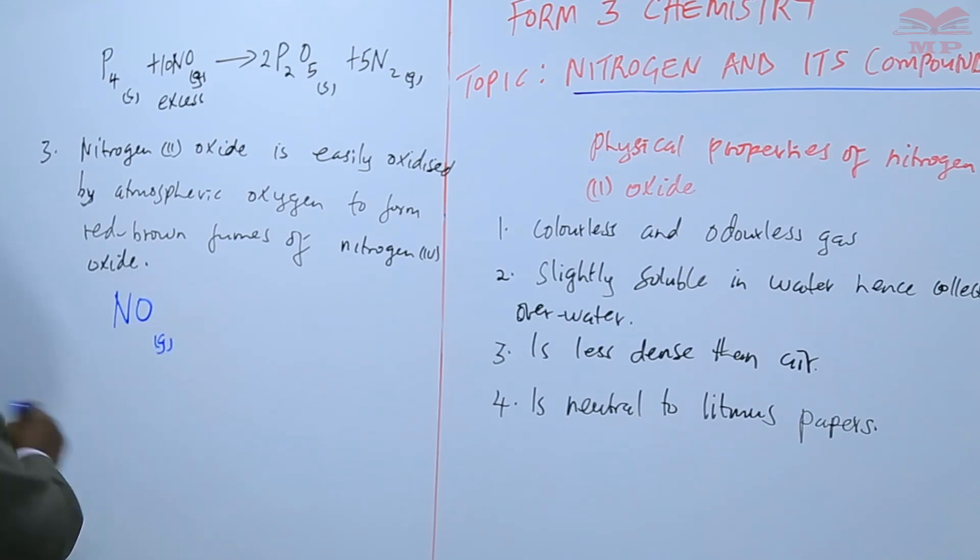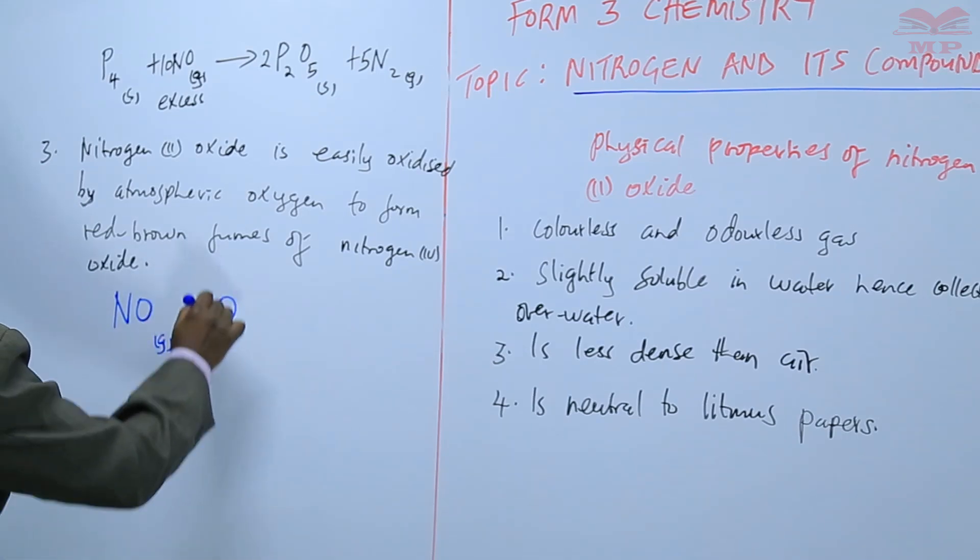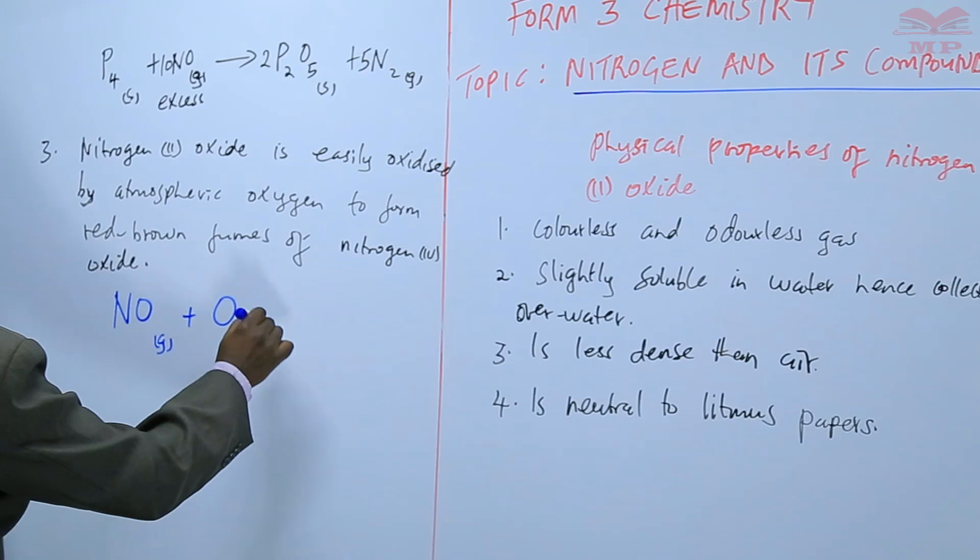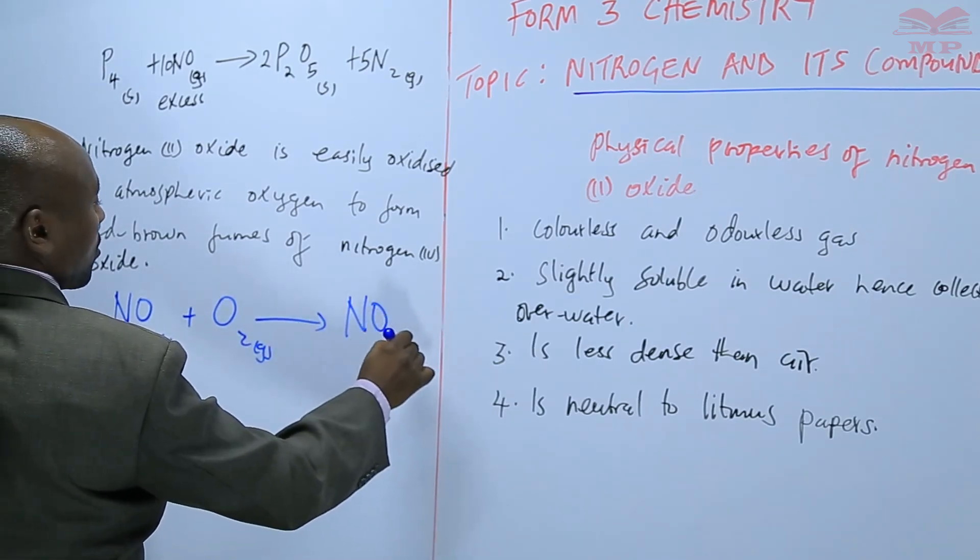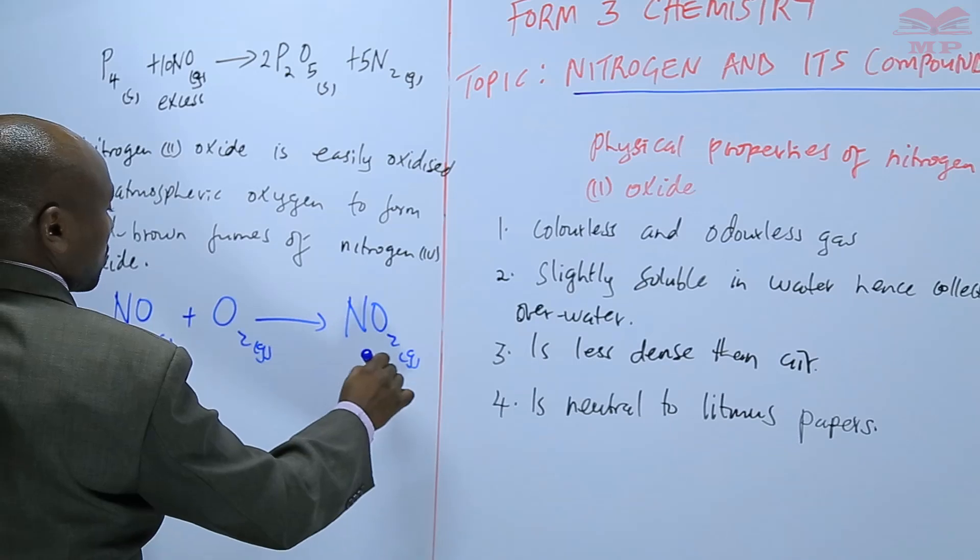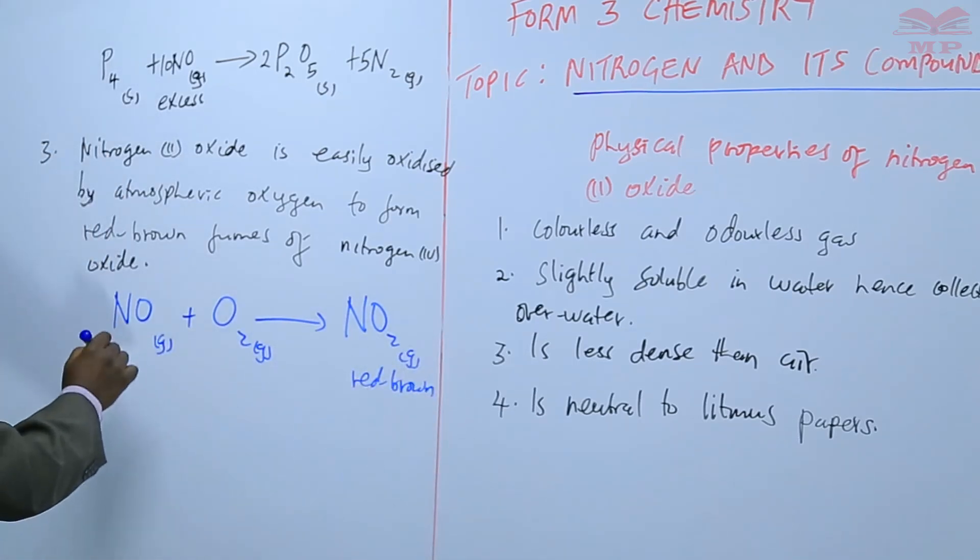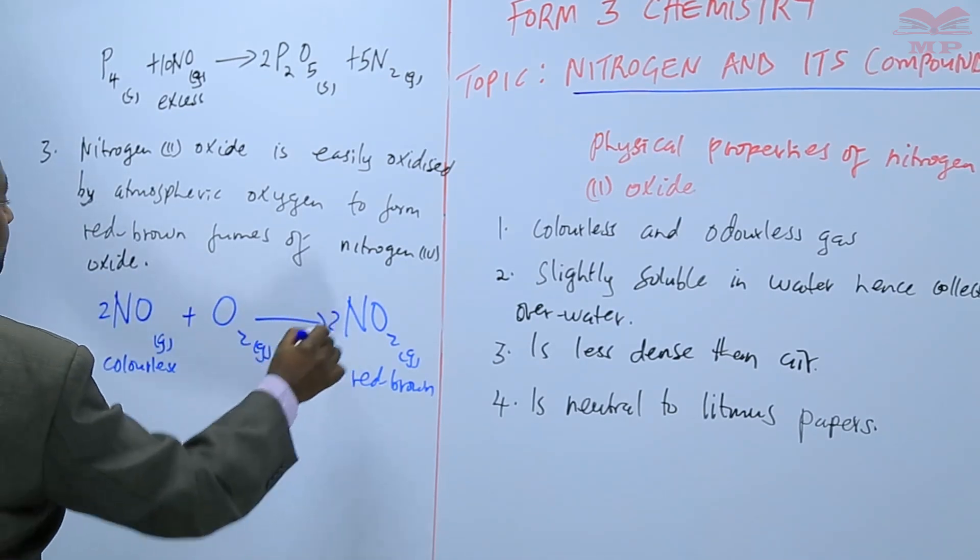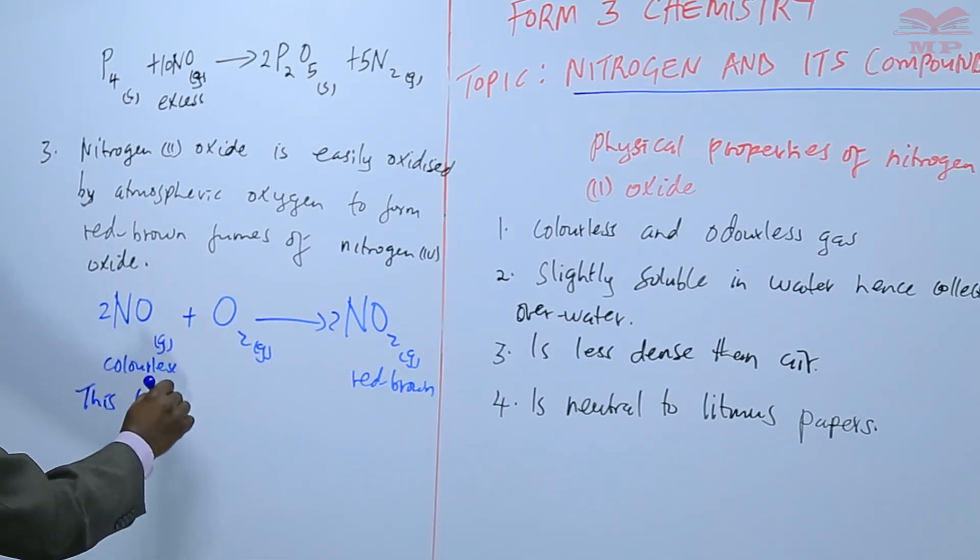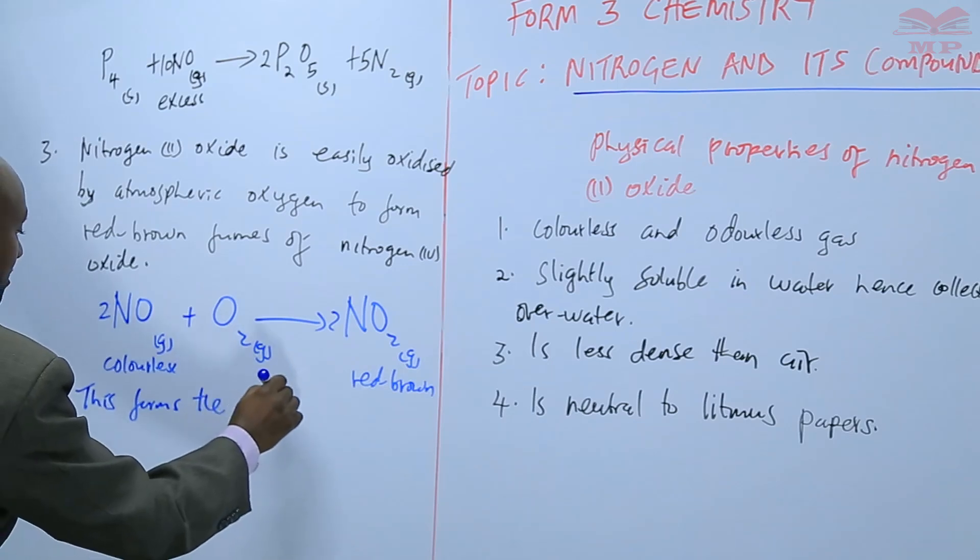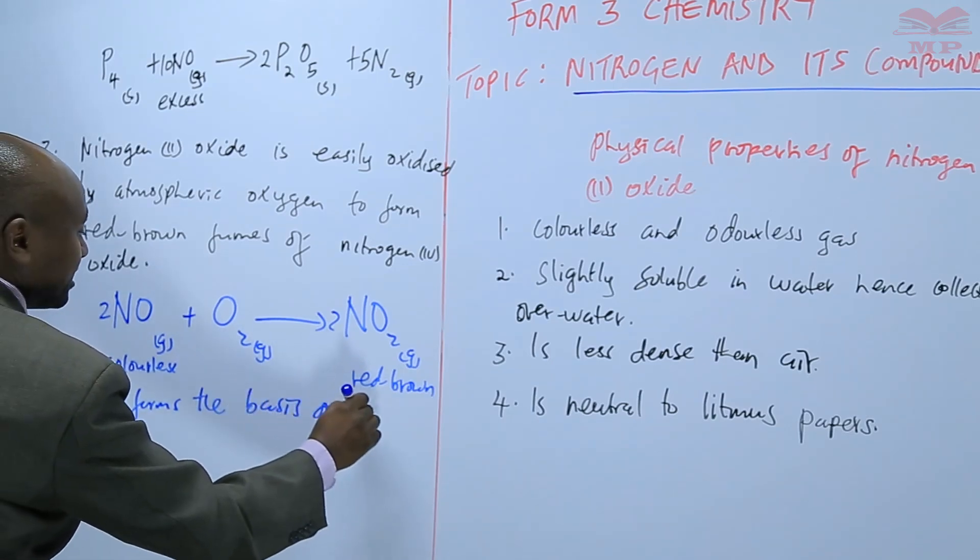Nitrogen 2 oxide plus oxygen in the air, we get nitrogen 4 oxide which is red brown, and this is colorless. To balance: 2, 2.